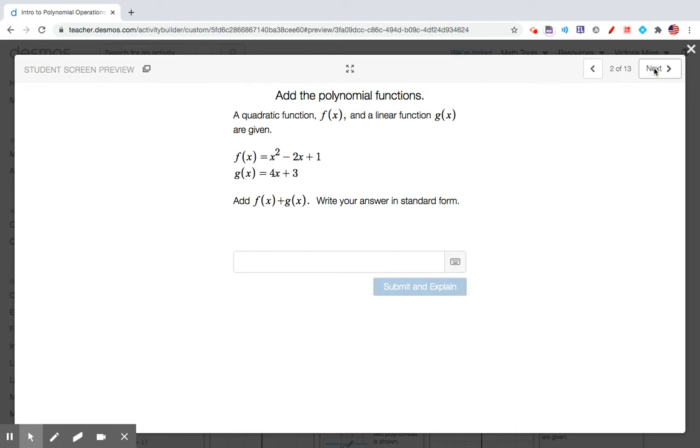A quadratic function f and a linear function g are given. Add f of x plus g of x. Write your answer in standard form. So you're going to be adding this quadratic trinomial plus this linear binomial, combining like terms and writing your answer in standard form.